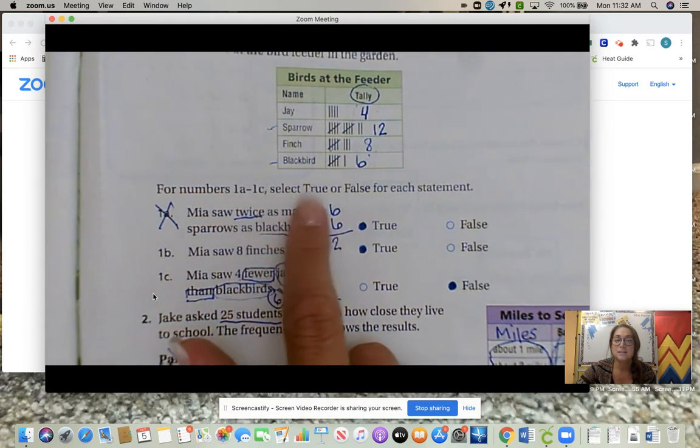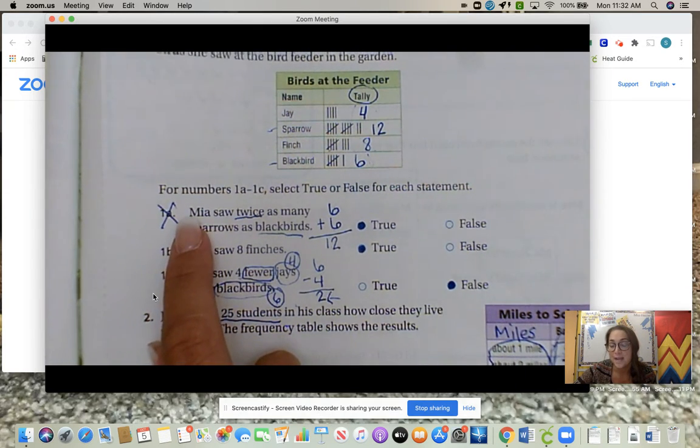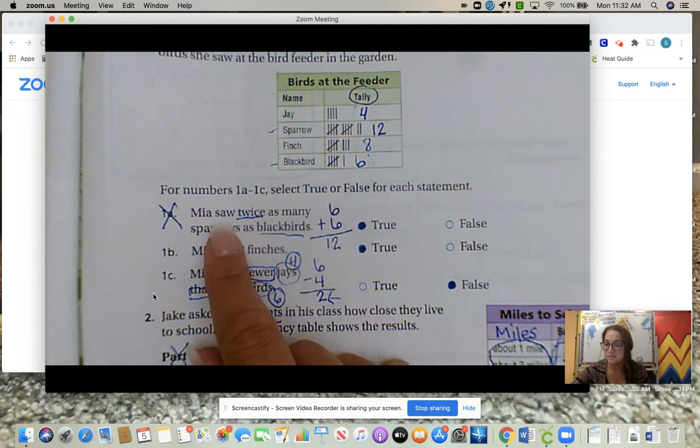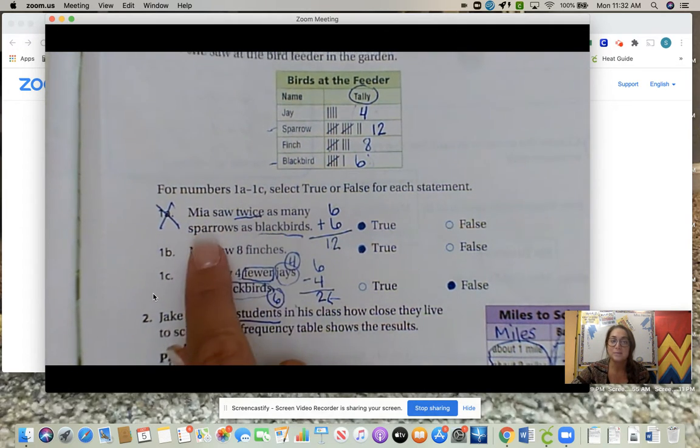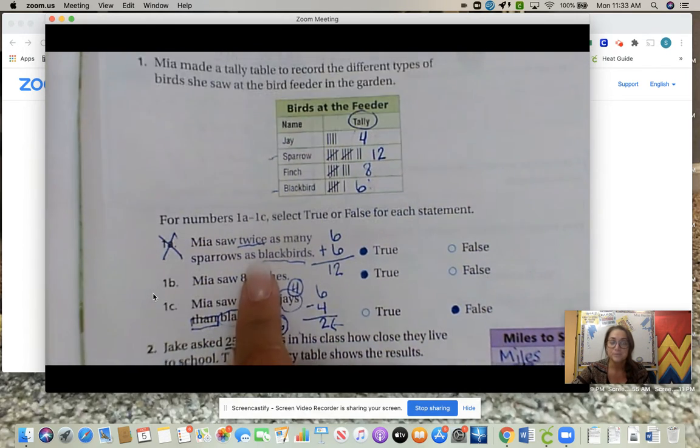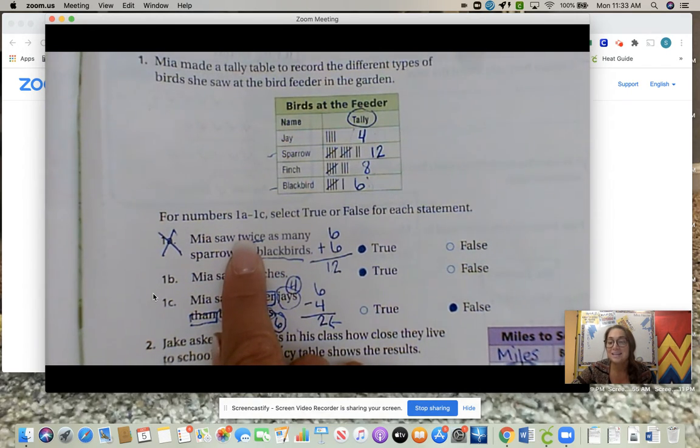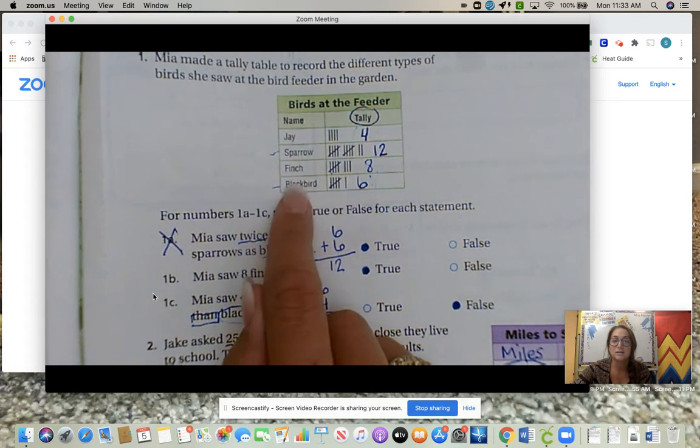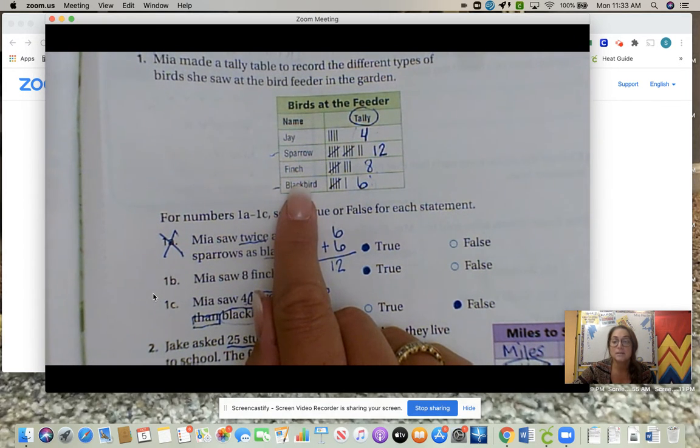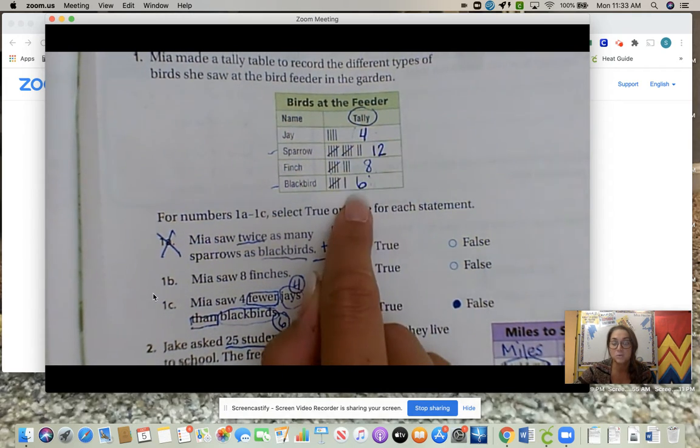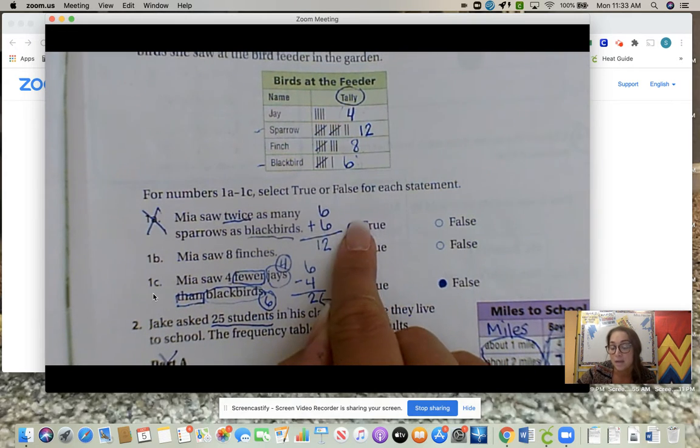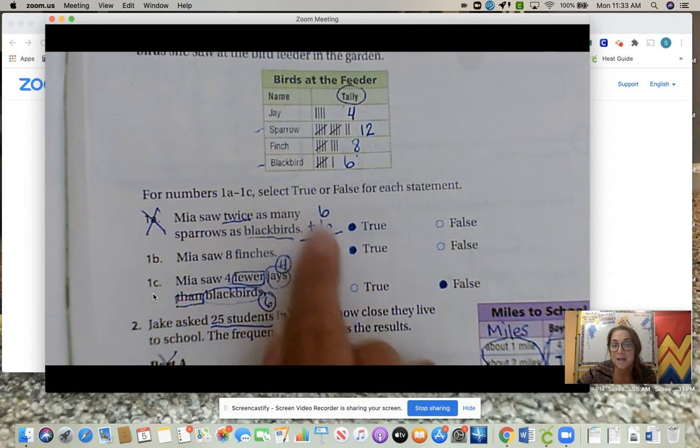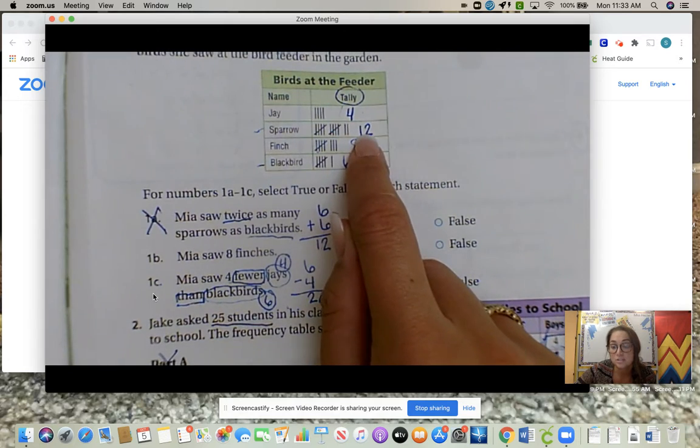For numbers 1a through 1c, select true or false for each statement. I crossed off 1a, but we didn't practice it enough, so this type of question will not be on the brain check. Mia saw twice as many sparrows as blackbirds. Is that true or false? When it says twice, you add two times of the same number. The smallest number is six. You want to add it two times. Six plus six is 12. It is true. So twice as many blackbirds is 12, and she saw 12 sparrows.